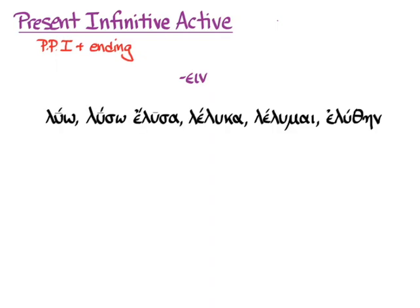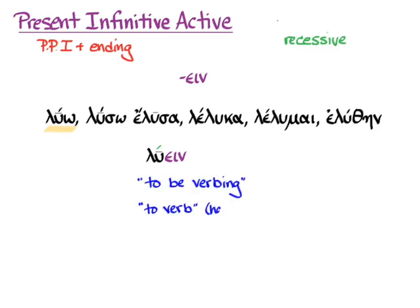Let's get our example verb λύω. We're going to go to the first principal part and take the omega off and have our stem λυ. We're going to add our new ending -ein. The accent for the present infinitive active is recessive. So we have a long last syllable and we can only go back to the second to last syllable, which is the only syllable we have left anyway. So we get λύειν.